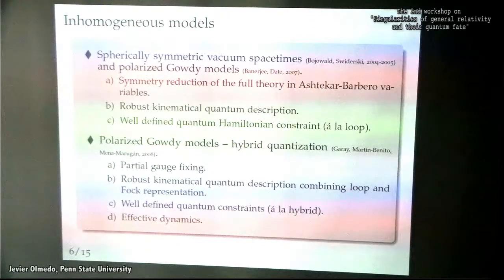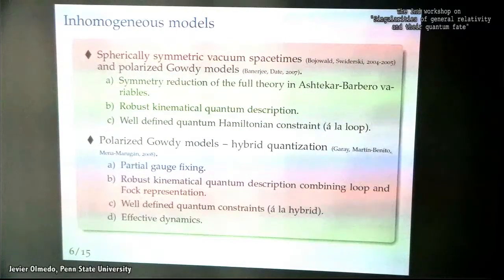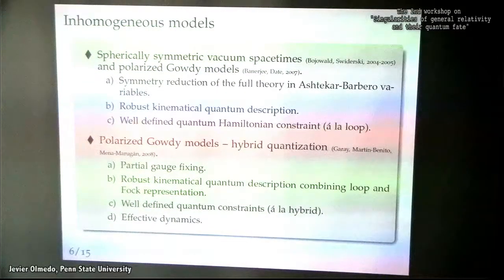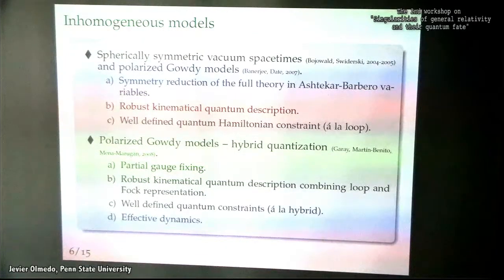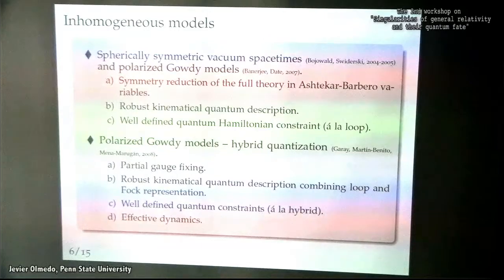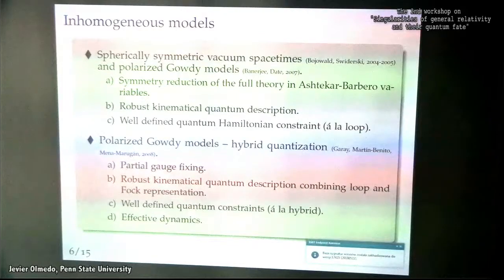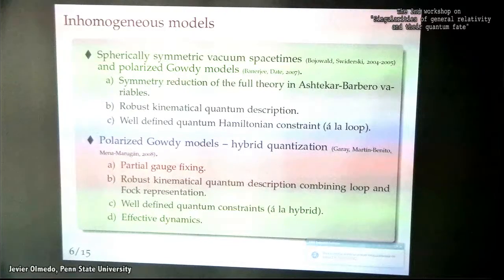Later, there was a proposal to deal with the quantization of Gowdy cosmologies, where it was proposed to consider a partial gauge fixing and then combine a loop representation together with a Fock quantization for the homogeneous and inhomogeneous degrees of freedom, respectively. There you have two homogeneous constraints — one scalar constraint, one diffeomorphism constraint — and you can provide the solutions and build the physical Hilbert space, but again all the construction is formal since nobody has been able to solve the quantum dynamics of this model. One advantage is that you can still analyze the effective dynamics.